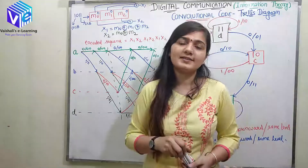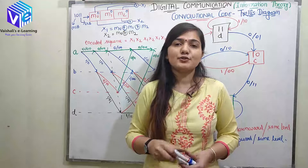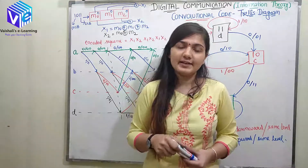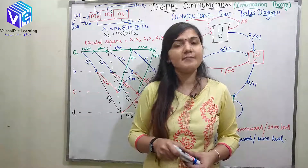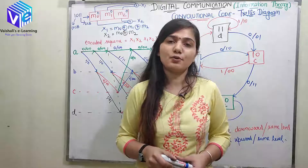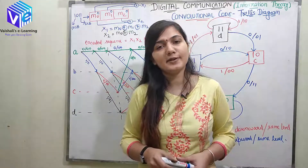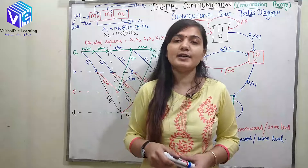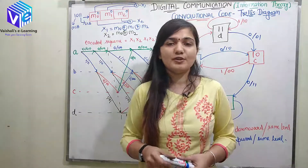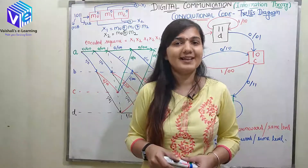This is how the trellis diagram works, and it is now complete. I have discussed all three methods of encoding: code tree, state diagram, and trellis diagram. In my next video, I'll discuss the decoding of convolutional code — first the Viterbi decoding, and after that the sequential decoding. I hope you like this video; if you do, share it with your friends and subscribe to this channel. Thank you.